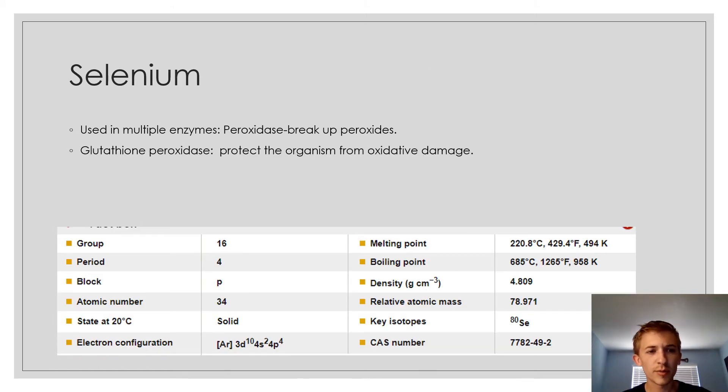Talking a little bit about selenium, it's used in multiple enzymes such as peroxidase to break up peroxides and glutathione peroxidase to help protect the organism from oxidative damage.